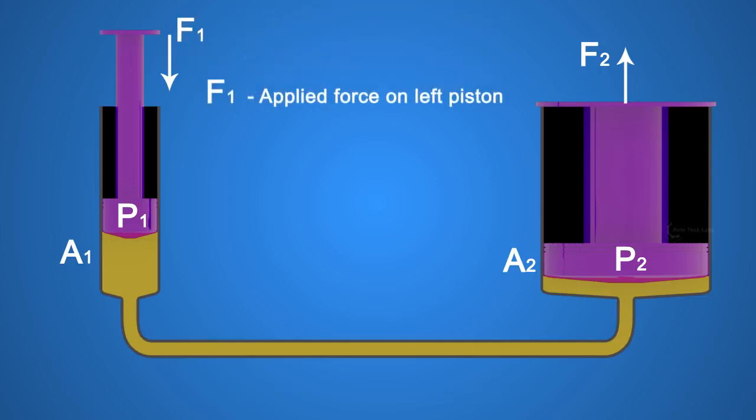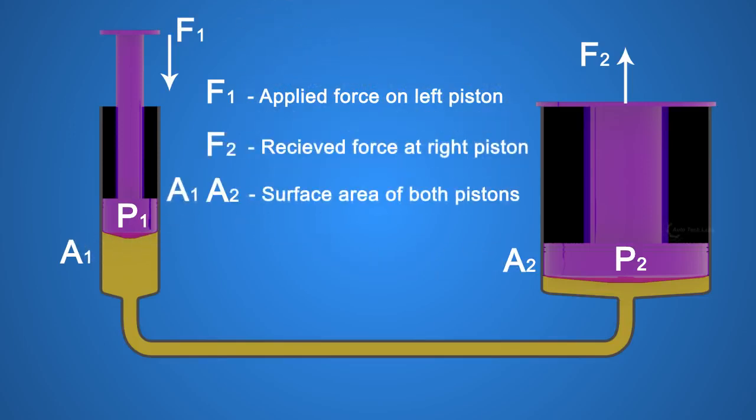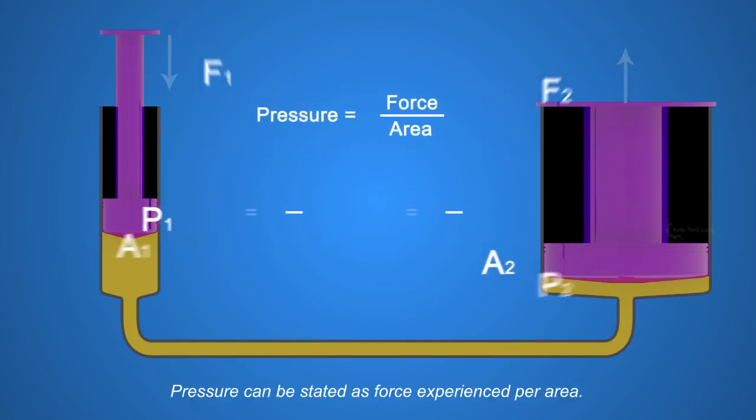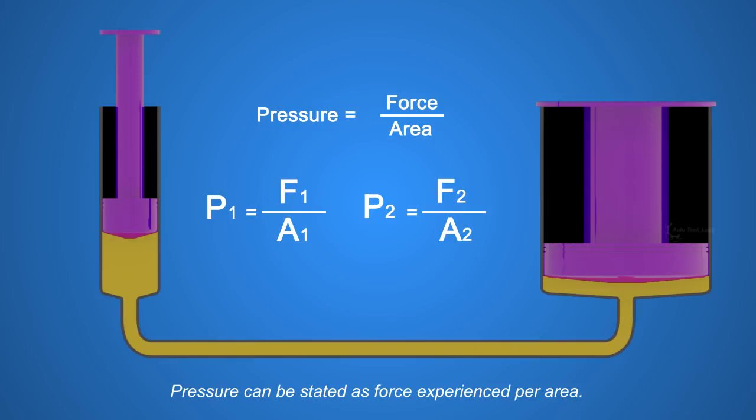F1, applied force on left piston. F2, received force at right piston. A1 and A2 are surface areas of both pistons. P1 and P2 are pressure experienced by both pistons. Pressure can be stated as force experienced per area. So P1 equals F1 by A1, and P2 equals F2 by A2.